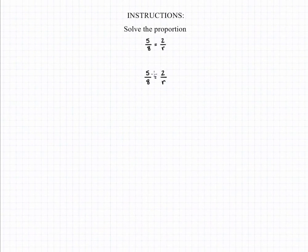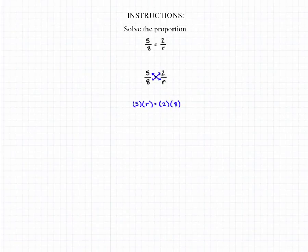In order to solve this proportion, we're going to start by cross multiplying. That's going to give us 5 times r is equal to 2 times 8. If we distribute through, we'll end up with 5r is equal to 16.